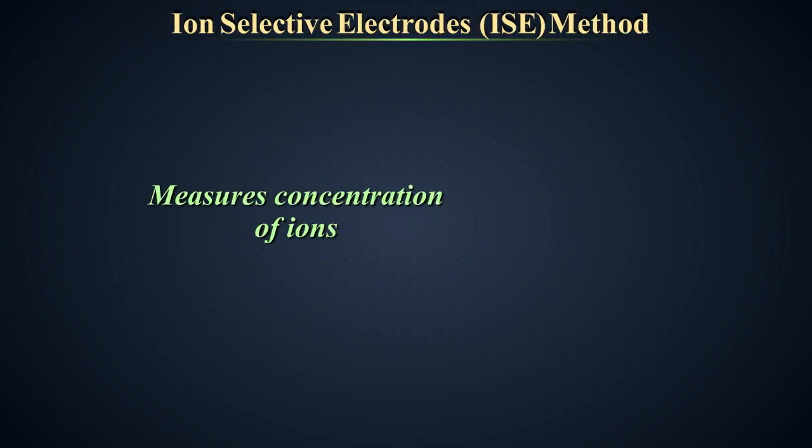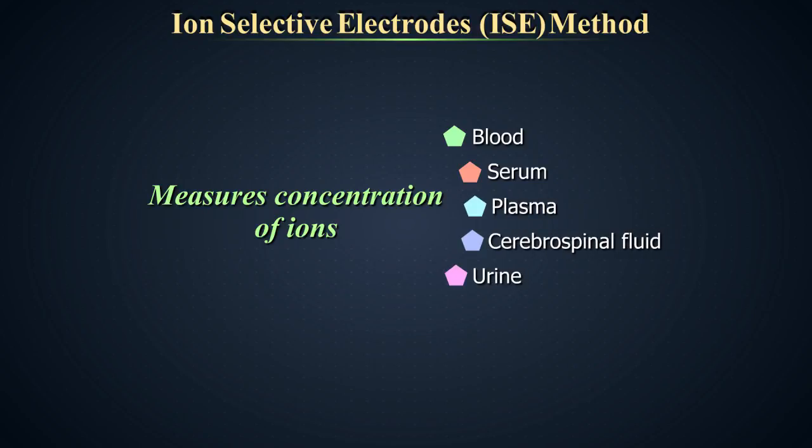Ion-selective electrodes are used in clinical chemistry to measure concentration of ions like sodium, potassium, chloride and calcium in blood, serum, plasma, cerebrospinal fluid and urine.